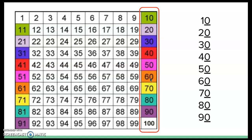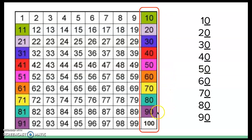Today we're going to focus more on multiples of 10. But what are multiples of 10? Multiples of 10 are any number that has a 0 in the ones spot. If you look on the right side of your hundreds chart, you will see numbers going down being multiples of 10 because they all have a 0 in the ones place. Let's practice counting by multiples of 10: 10, 20, 30, 40, 50, 60, 70, 80, 90, 100.